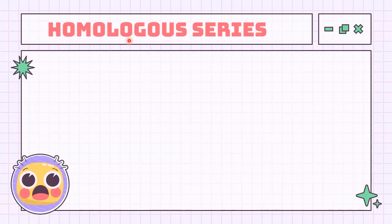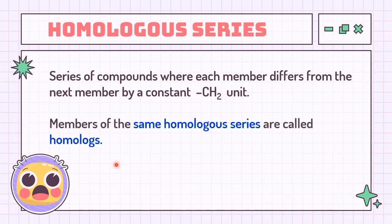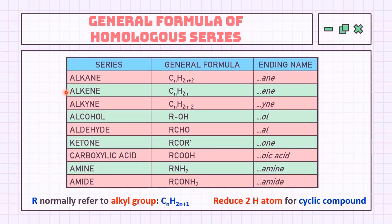The term homologous series indicates a series having similarities. The term 'homo' here means compounds having something in common — in this case, the functional group. Whereas 'series' refers to events that happen in sequence. For compounds in the same homologous series, each member differs from the next member by a constant CH2 unit. Each of the members are then called homologs. Shown on the slide are a number of homologous series and their general formulas.